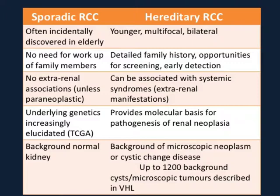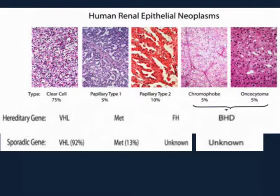That's what I'd like to touch on in this talk. In sporadic RCC, the background kidney is often normal, whereas in hereditary RCC there are many descriptions — some quite old — of background cystic changes or microscopic neoplasia. Some reports state that in VHL the background kidney can have up to 1,200 microscopic foci of disease; in papillary, hundreds have been described; and in Birt-Hogg-Dubé, dozens of background tumours have been reported.